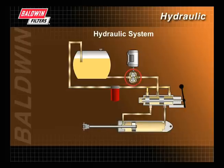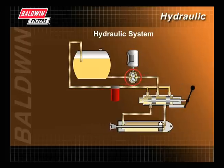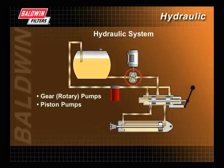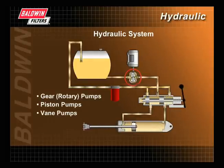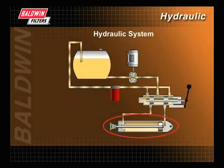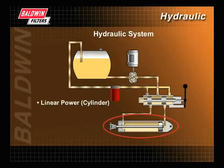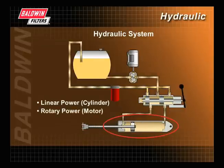There are three basic types of pumps used on hydraulic equipment: gear or rotary pumps, piston pumps, and vane pumps. Actuators are output components which do the work in the form of linear power, a cylinder, or rotary power, a motor.